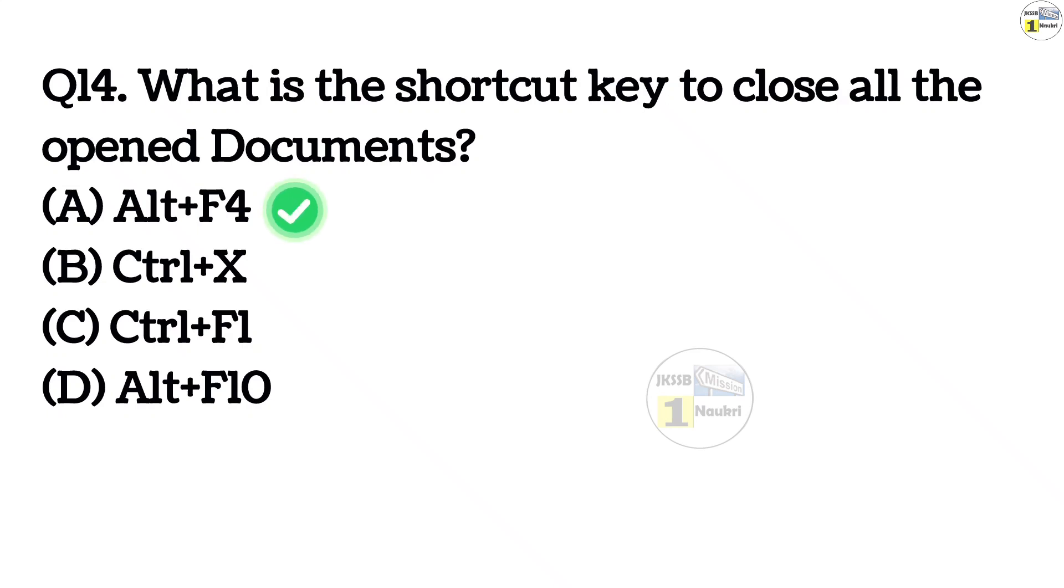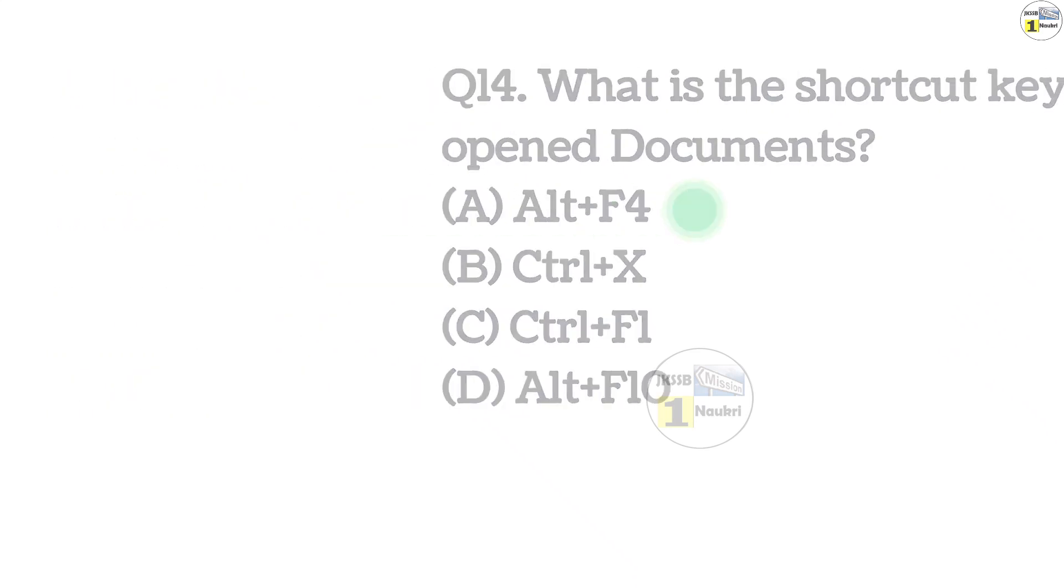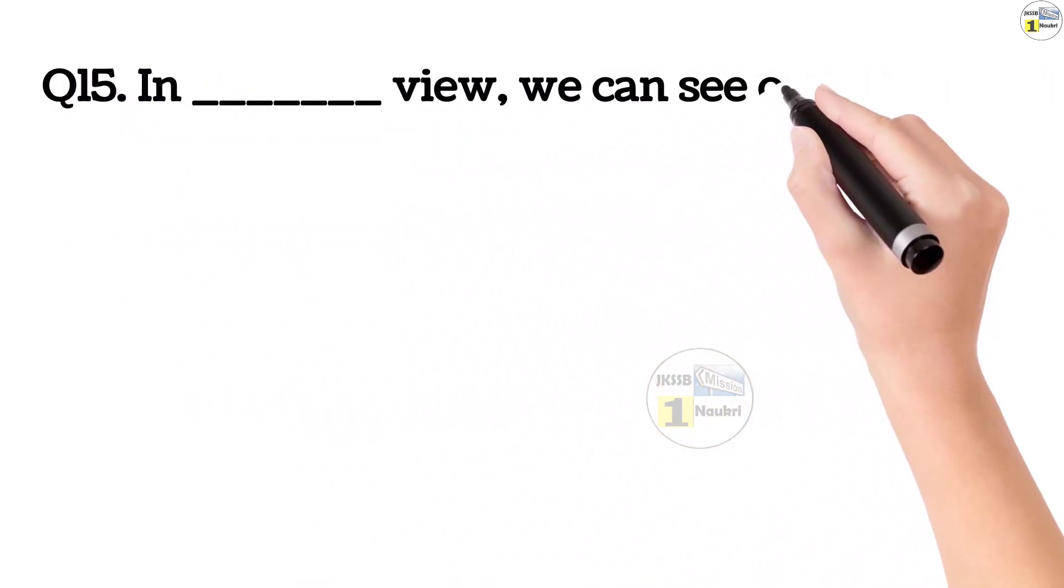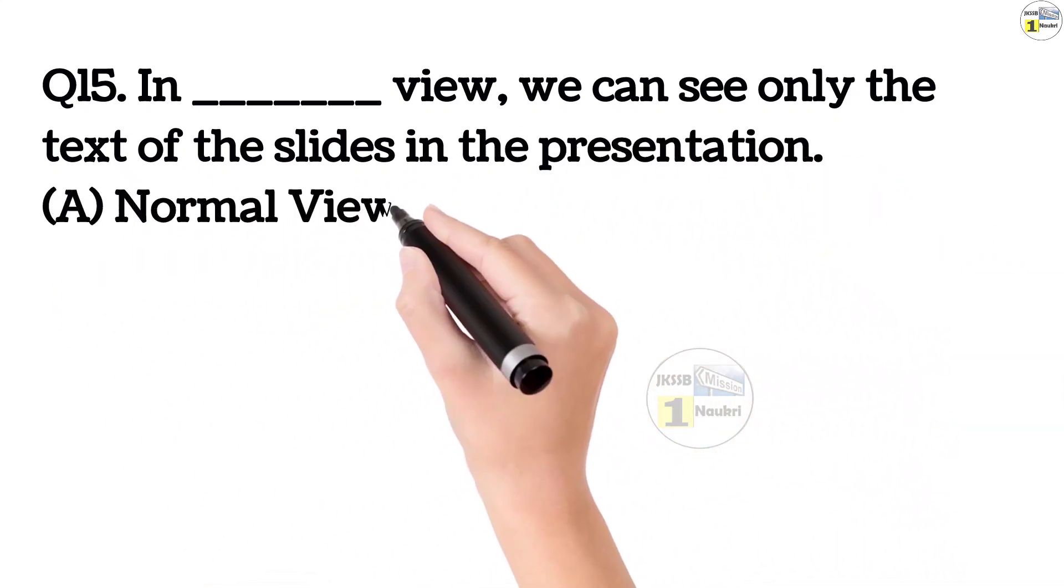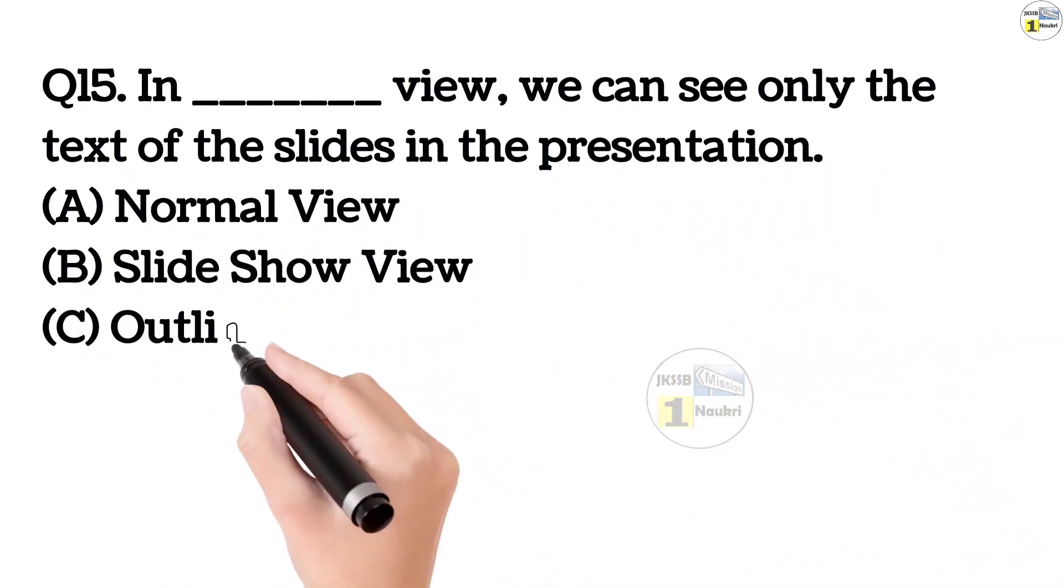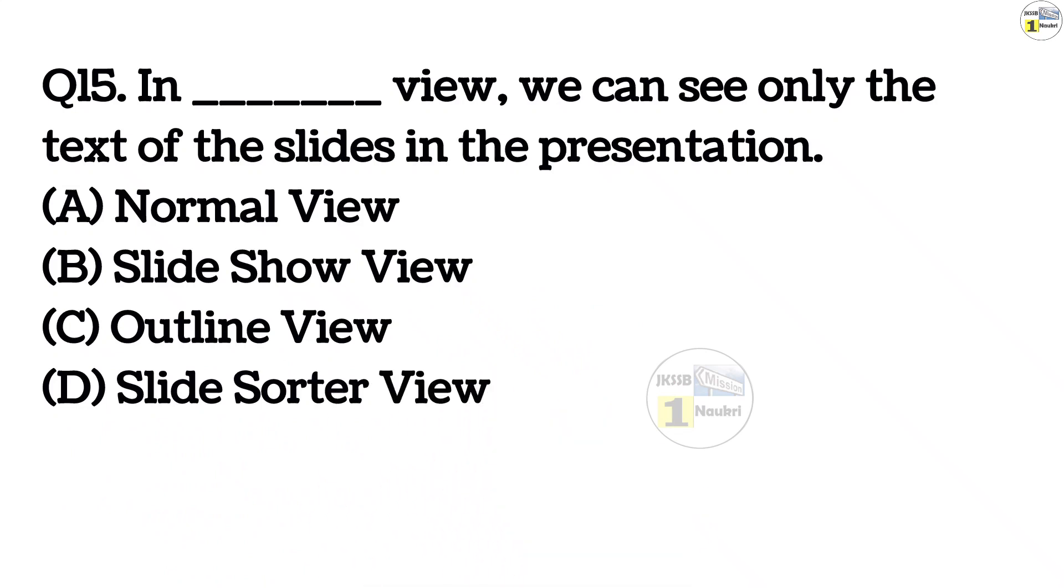Question number 15. In dash view, we can see only the text of the slides in the presentation. Option A, normal view. Option B, slideshow view. Option C, outline view. Option D, slideshorter view. This answer is option C, outline view.